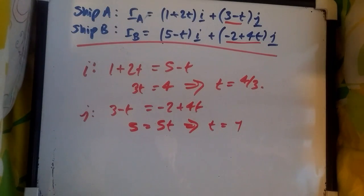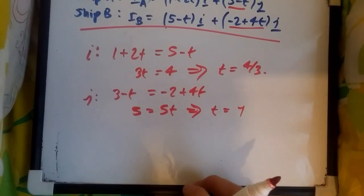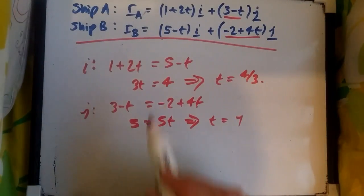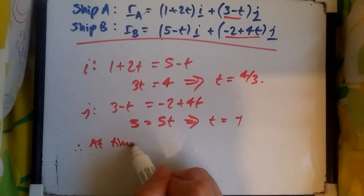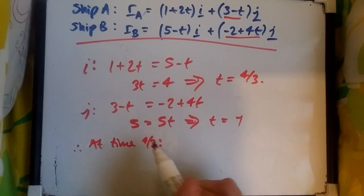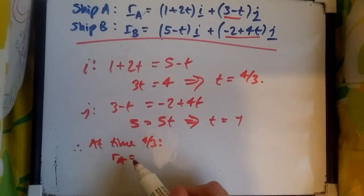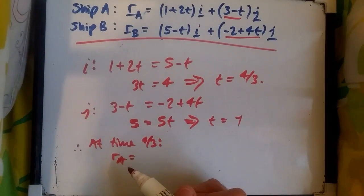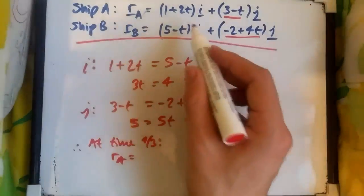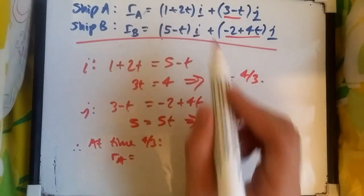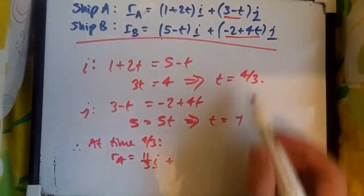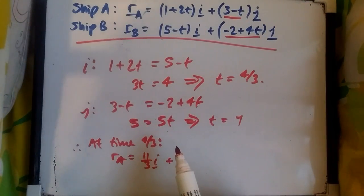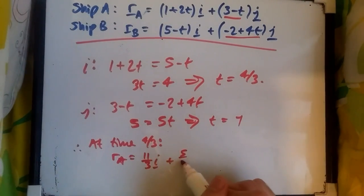Let's substitute one of these two values in and see what position we actually are at. Suppose we put t = 4/3 into ship A and find out where it is at this time. At time 4/3, we know that rA has position vector: putting 4/3, you should get 1 + 2(4/3) which gives us 11/3 i, plus 3 - 4/3, which should give us 5/3 j.